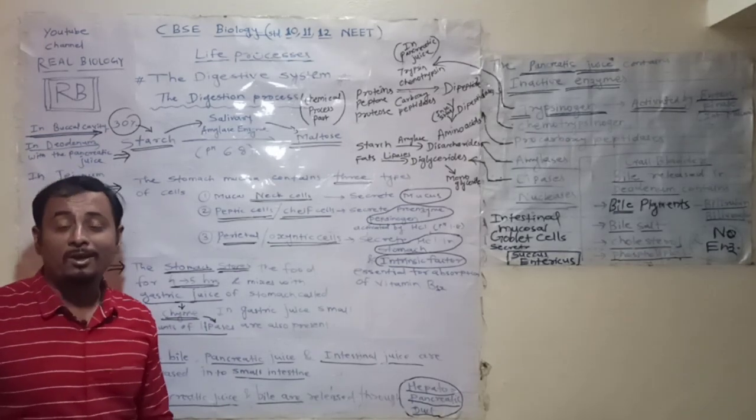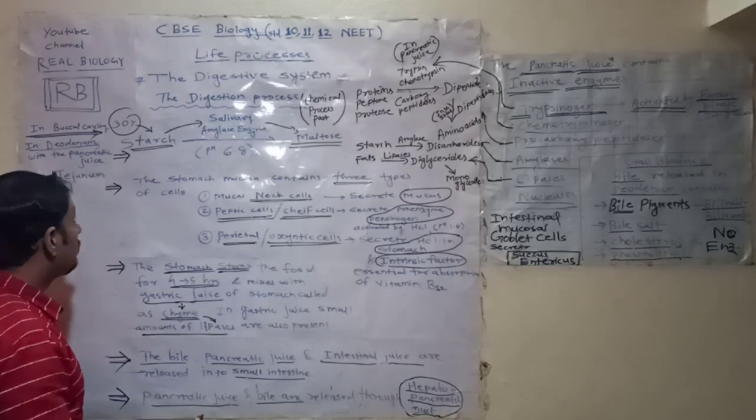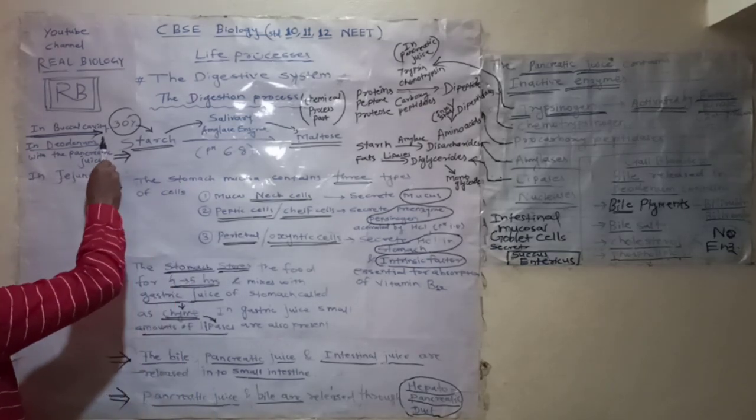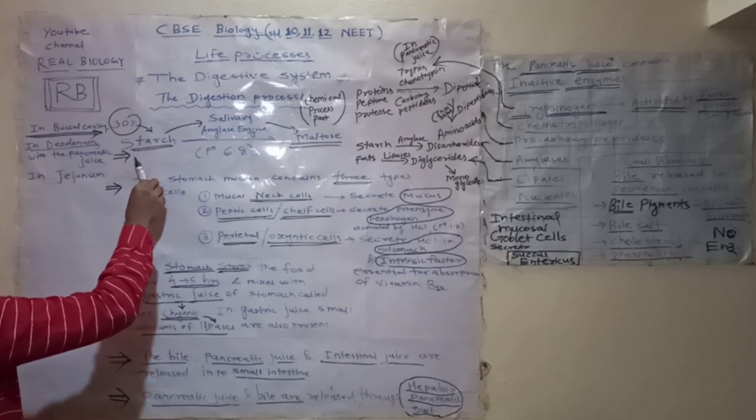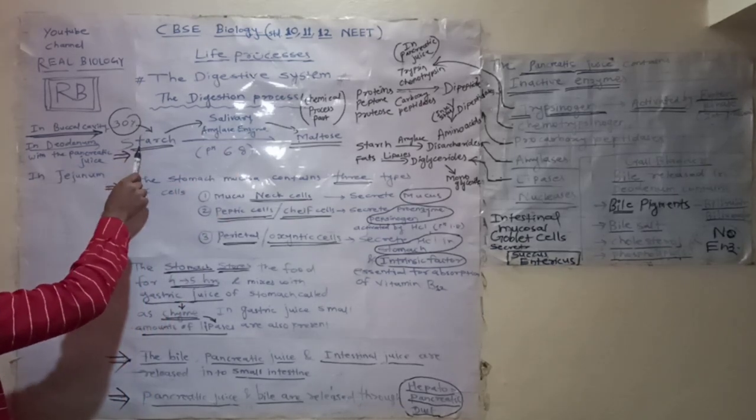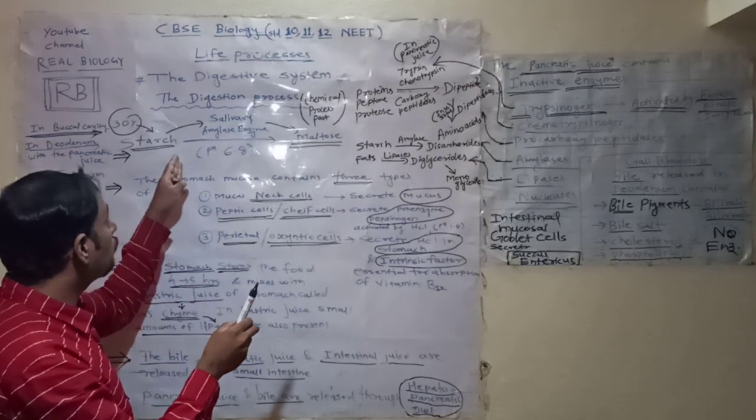The chemical process involves various biochemical reactions in which various kinds of enzymes are involved. The first process starts at the mouth where we eat the food. The food when enters the mouth is mixed with salivary amylase, and nearly 30% of the starch and other carbohydrates start to digest in the mouth only.